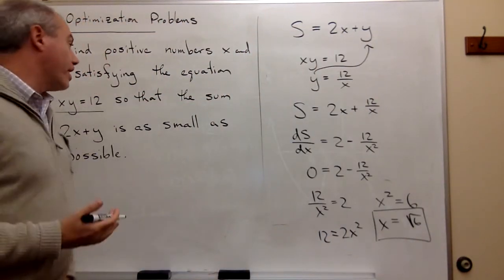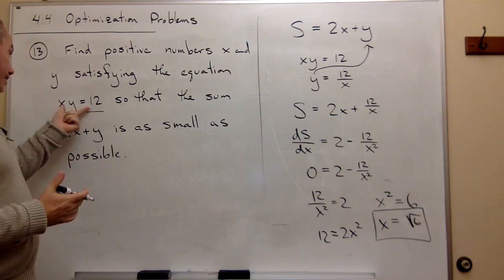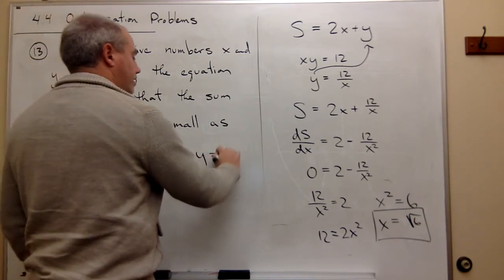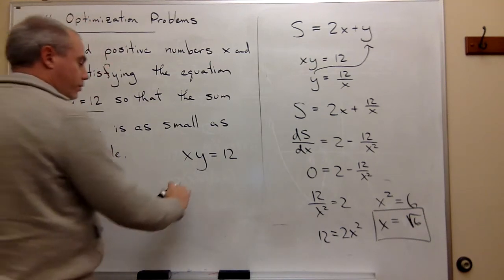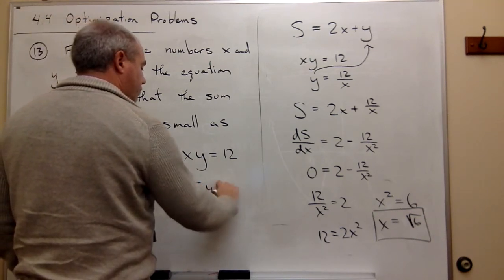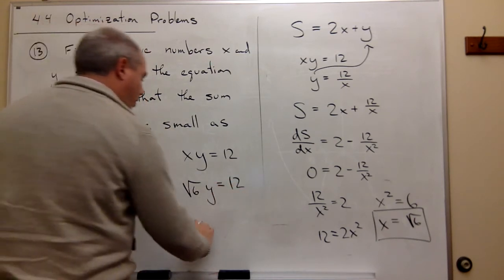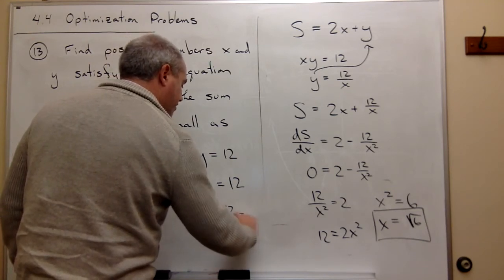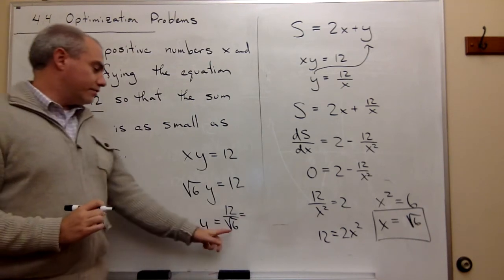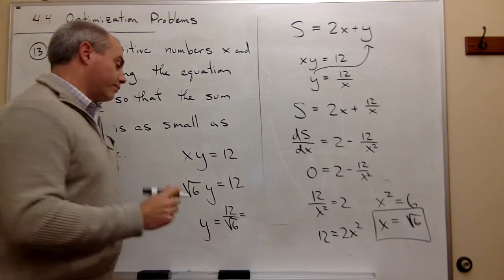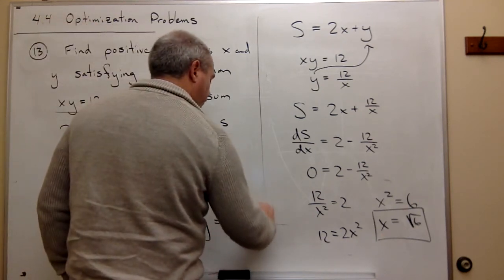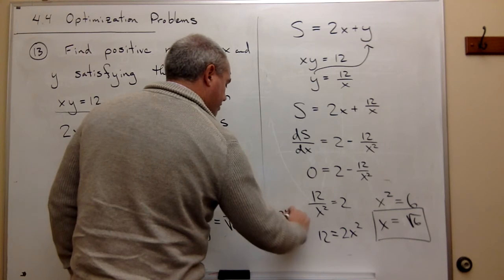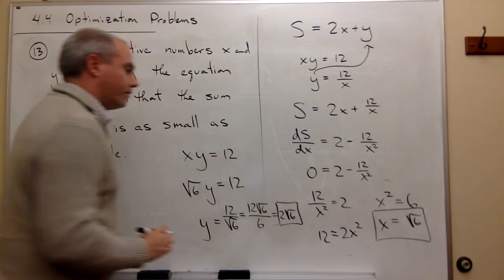If x is the square root of 6, then y we can figure out from either one of these conditions right here. We know that x times y is 12, so since we know that xy equals 12 and that x is the square root of 6, then √6 times y is 12, and y is 12/√6, or if you don't like to have square roots in your denominator you could always multiply top and bottom by the square root of 6 and get 12√6/6 or if you prefer 2√6.